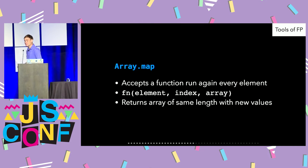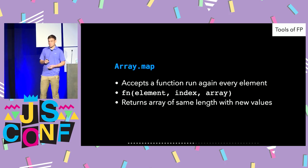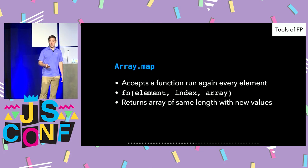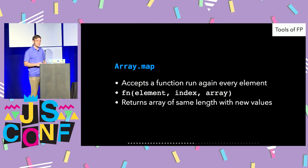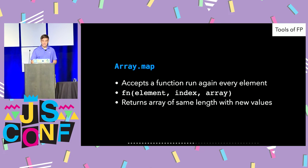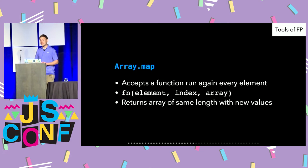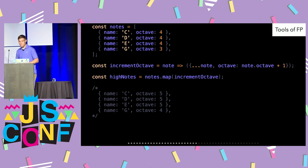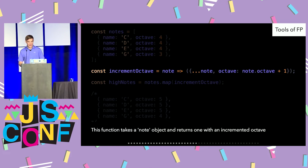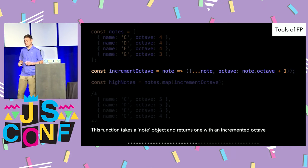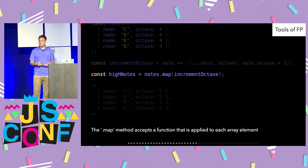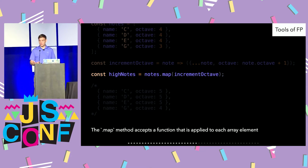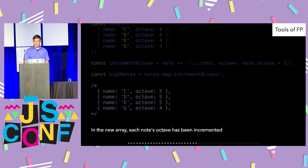Array.map is similar — it accepts a function run against every element, receiving the element, index, and array. Rather than filtering by true or false, it returns an array of the same length with new values. Here we have a melody and our increment-octave function from before, which takes a note and returns a new note. We map the notes with increment-octave and get the same melody but with each note's octave incremented.